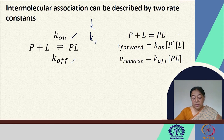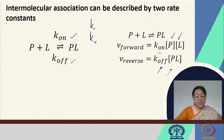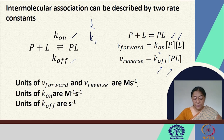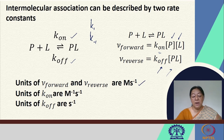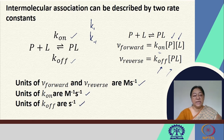The rate of the forward reaction is the rate constant Kon multiplied by the product of the protein and ligand concentrations. The reverse rate is Koff multiplied by the PL concentration. The units of Kon are mol⁻¹ s⁻¹, and the units of Koff are s⁻¹.